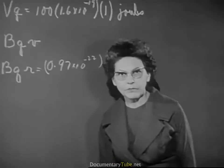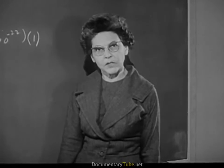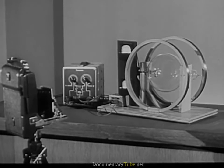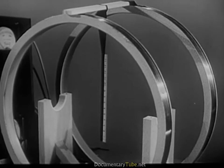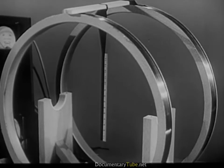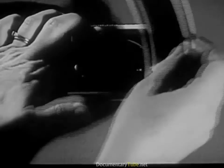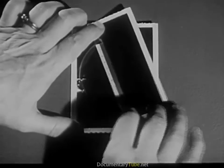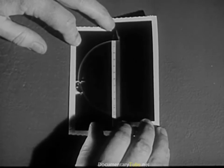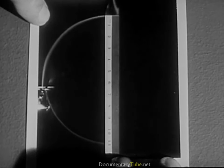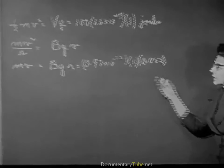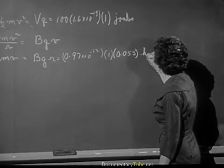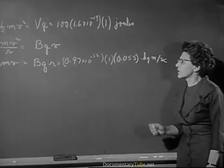And now we have to measure R. We can't put a ruler inside the tube and measure R directly, so we have to use some kind of trick. What I've done is this: I've taken a picture of the circle formed by the electron beam, then removed the tube and taken another picture of a scale put in exactly the same plane occupied by the beam. Here are the pictures. I've cut this along the scale, and now I can use it to find the diameter of the electron beam. The diameter is 11 centimeters, and R is half of this — 5.5 centimeters, or 0.055 meters. So here we have the momentum of an electron traveling in the particular circle that we've been watching.